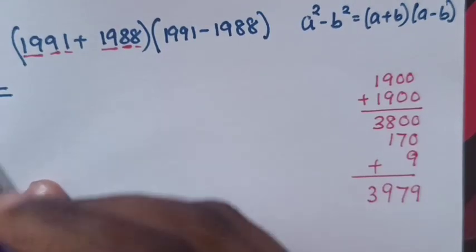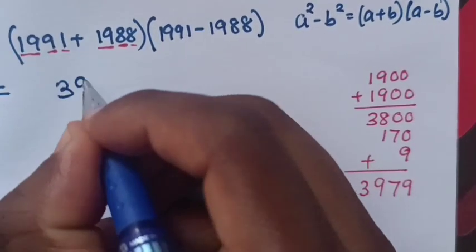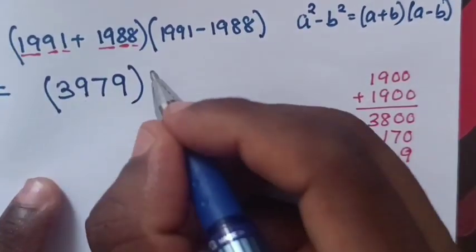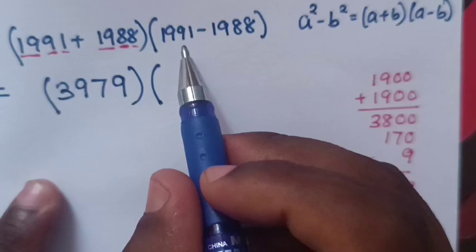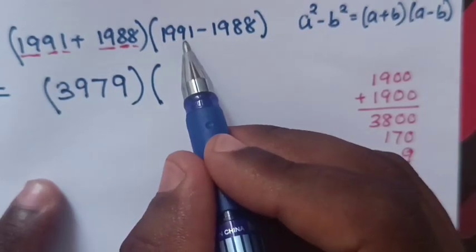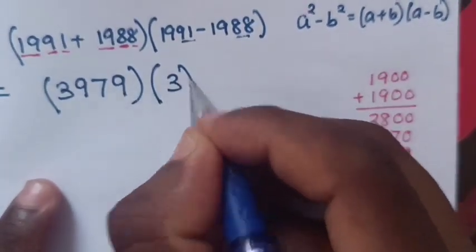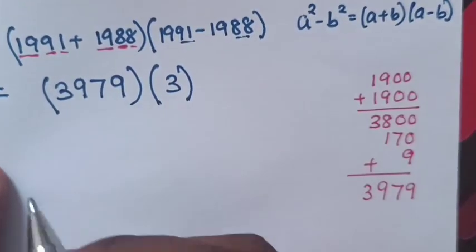Therefore, here value of addition in bracket is 3979. Times, here simple way to subtract, here is 91 minus 88 is 3. So...